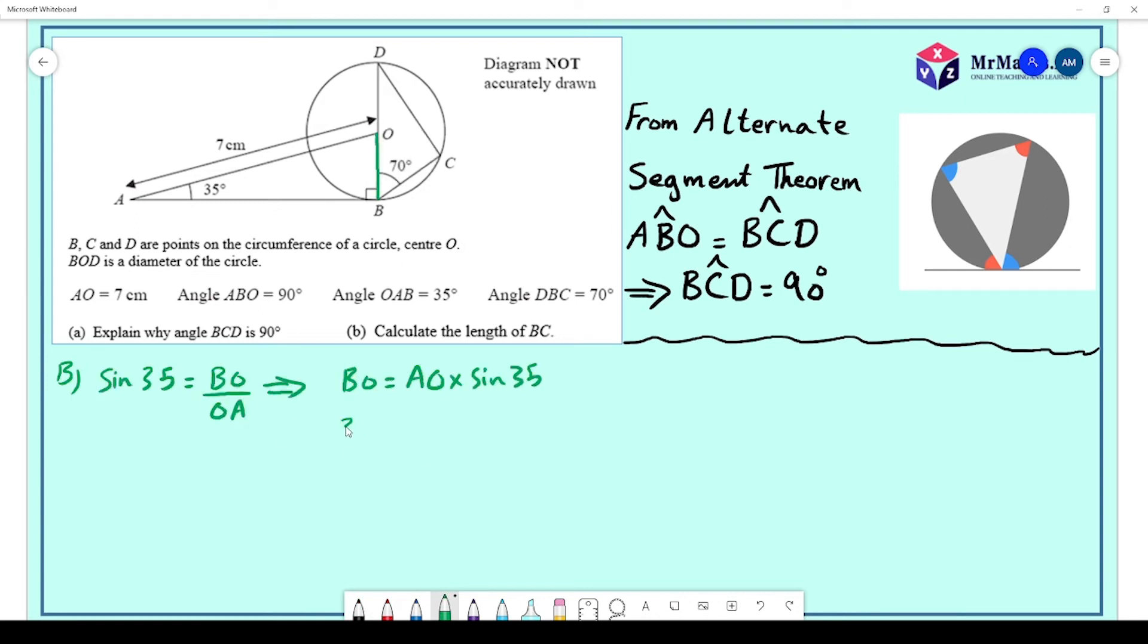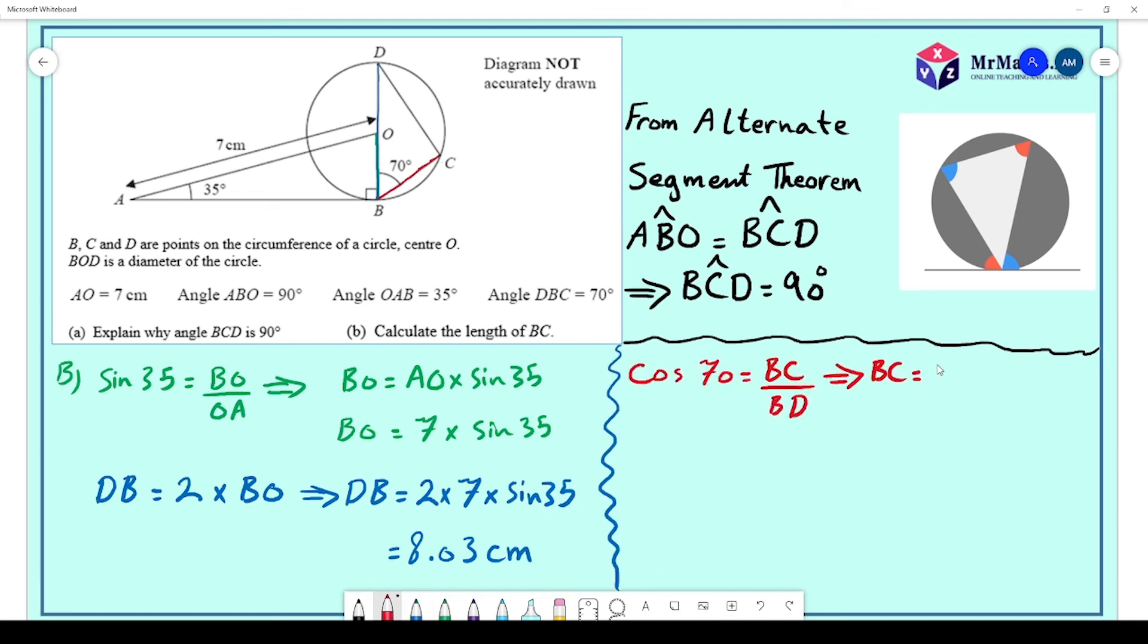For part B, remember that BOD is the diameter of the circle. BO equals 7 centimeters, the radius. To find BC, we use trigonometry. Using cosine with the given angles, BC equals 7 times sine 35 degrees, which gives us 2.75 centimeters.